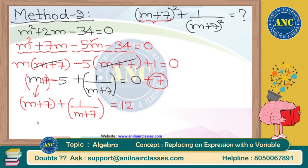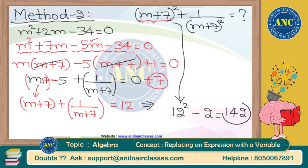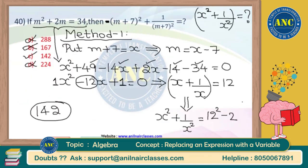Therefore (m + 7)² + 1/(m + 7)² = 12² - 2 = 142. Either Method 1 or Method 2 gives the same answer. The most efficient approach is recognizing that x² + 1/x² must be of the form k² - 2, and checking answer options. If only one option satisfies that form, you save a lot of time in the exam. I hope Method 1 and Method 2 are very clear for every student.